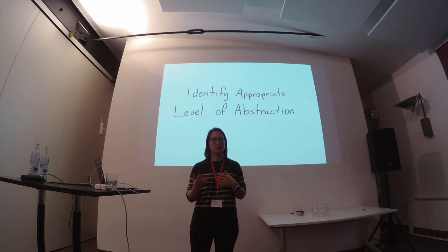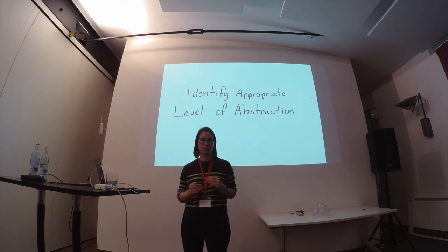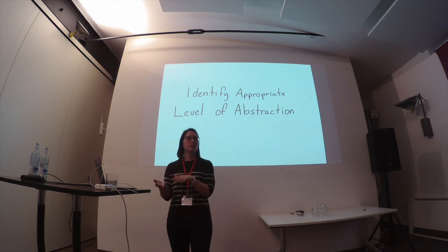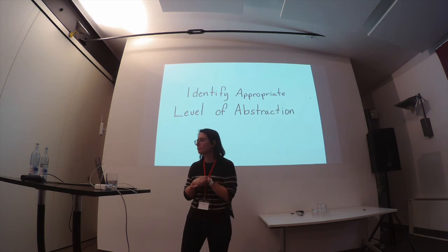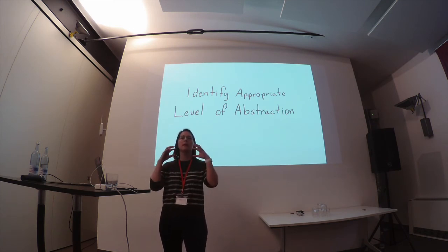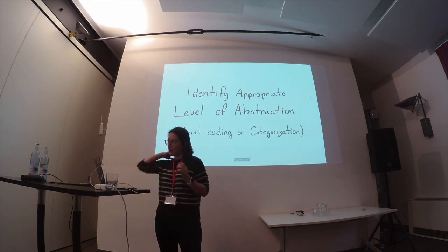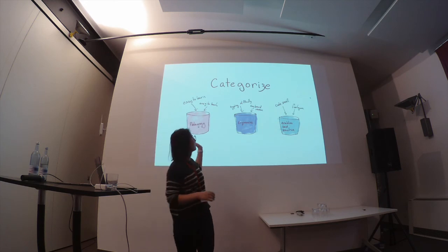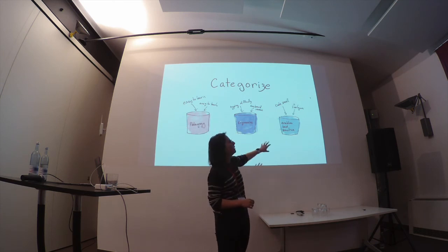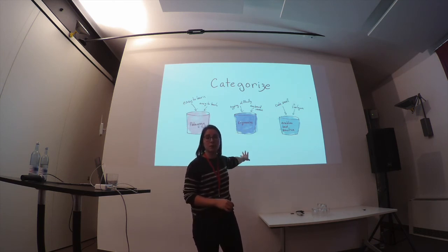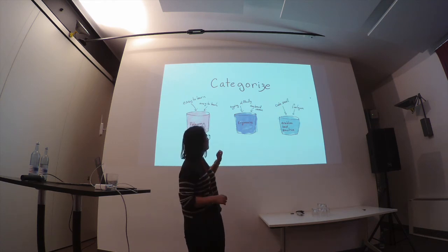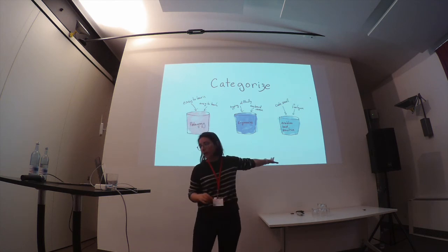I found myself going day after day using different vocabulary to identify the same things — sometimes I would say 'learnability' rather than 'teachability,' but those were kind of the same. The next step is to identify the appropriate level of abstraction, called in grounded theory axial coding or categorization. Easy to learn, easy to teach — they're talking about pedagogy. Typing difficulty, keyboard version — that's about ergonomics, which is interesting because the pipeline operator had a lot to do with ergonomics.